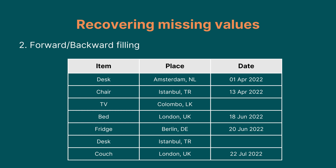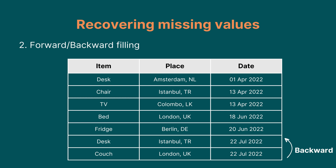Forward filling: with numerical values, you can order the values and fill in the missing values based on the value that comes before them. Or backward filling: inversely, you can opt for filling the missing values with the value that comes after them. You might need to combine these methods in case of missing values being at the beginning or end of the dataset when ordered.